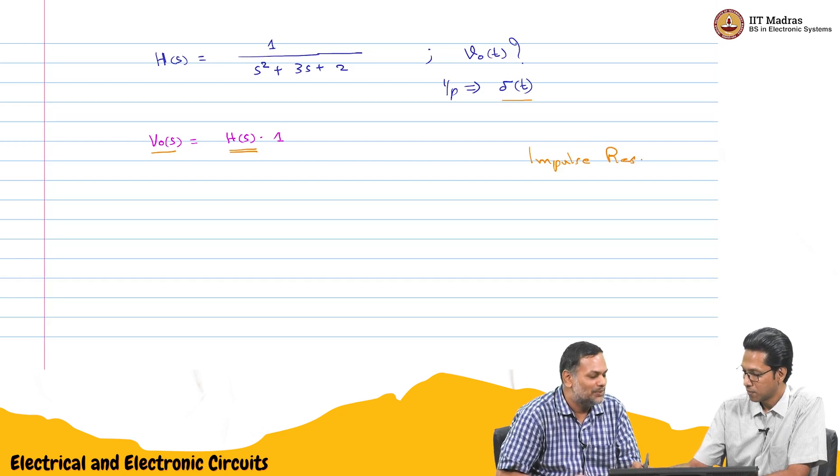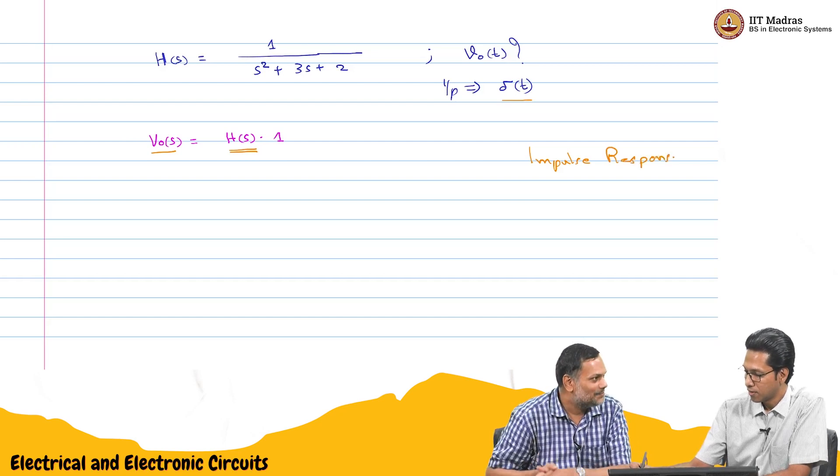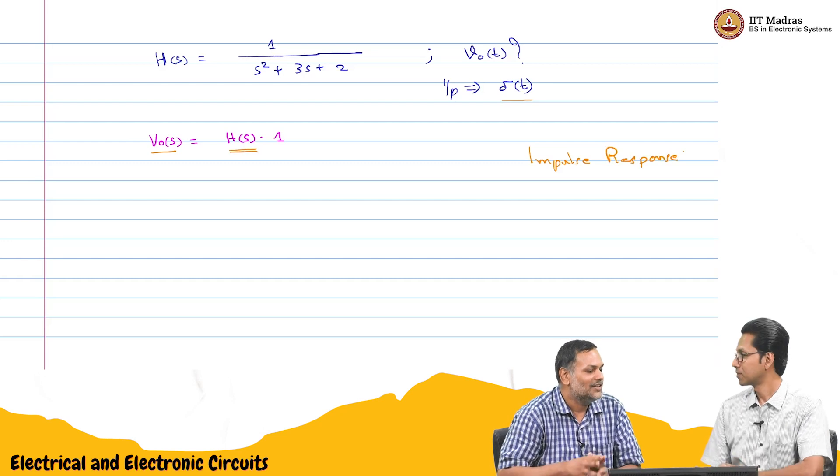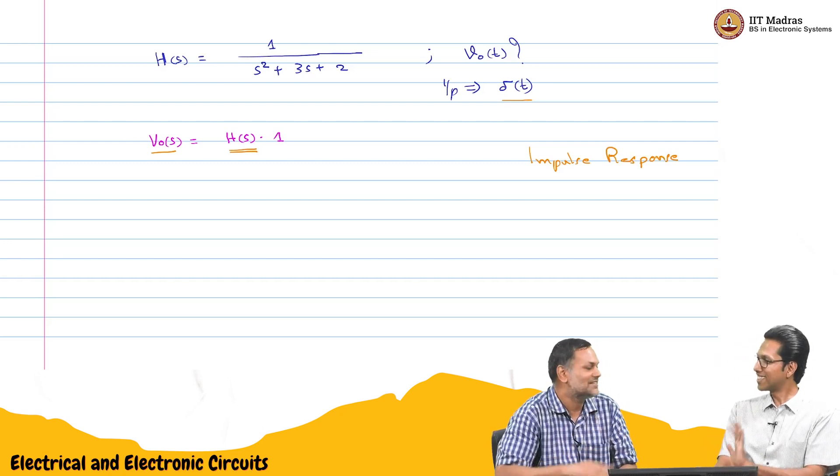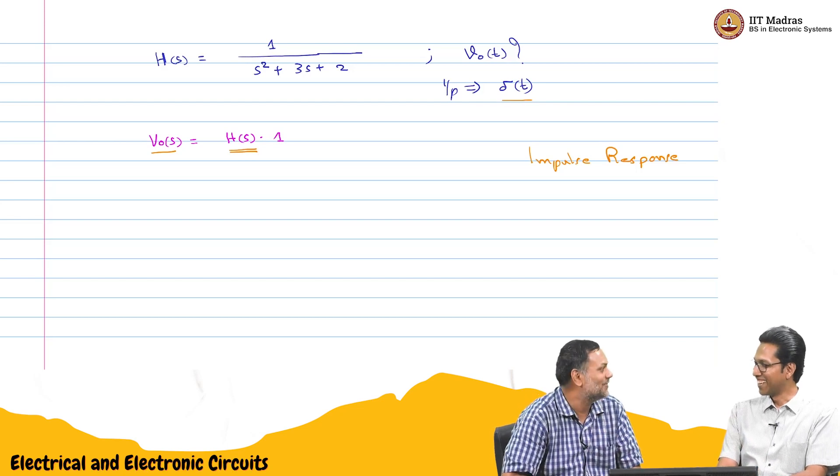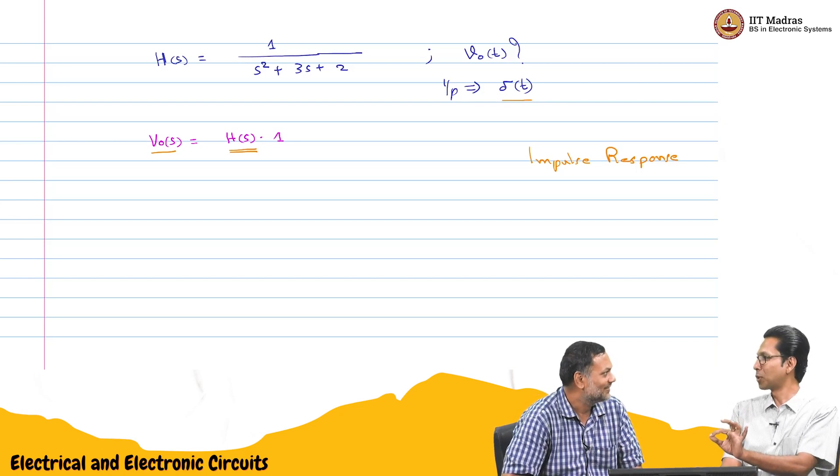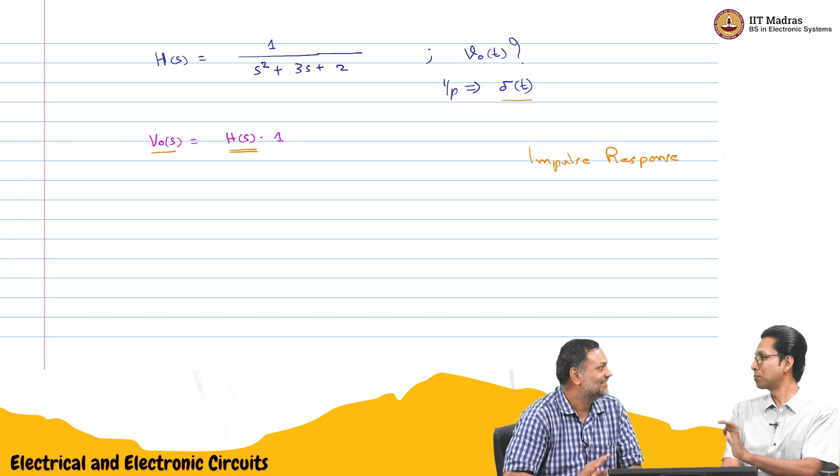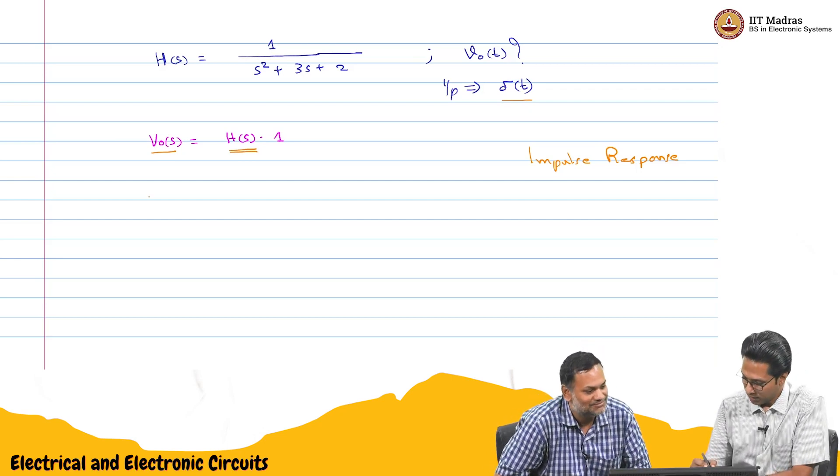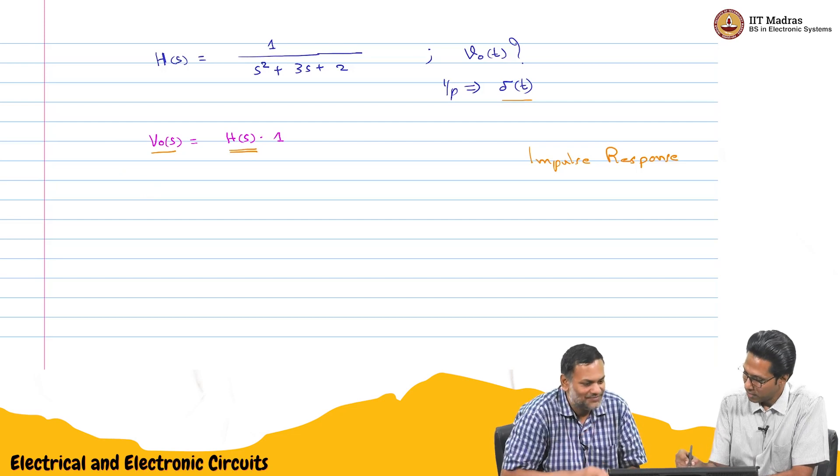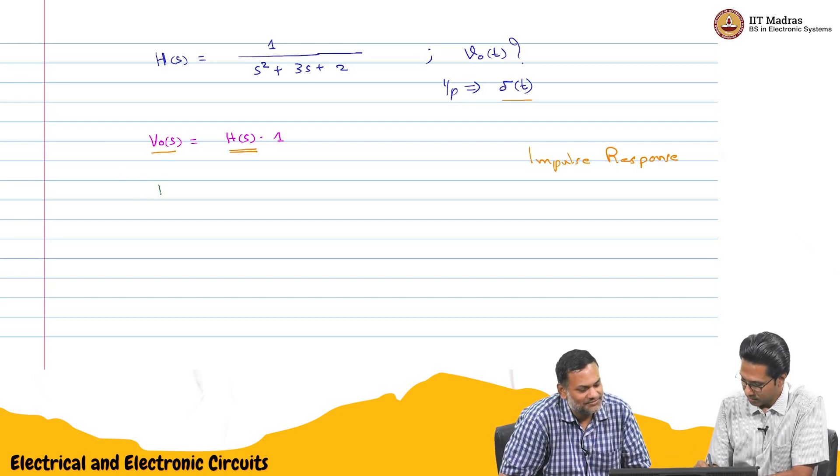Makes sense. Because if you give an impulse, the output in the s domain is the transfer function itself. I think that is the beauty of it. That is very beautiful, which you can get only when the input is impulse. No other input can give this. So, that way our job here became very easy.